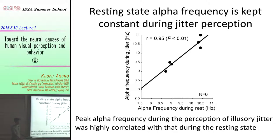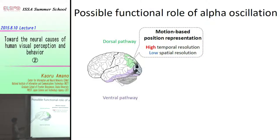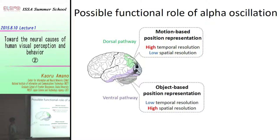So how do we interpret this result? Our hypothesis involves both the ventral pathway and dorsal pathway, which process different visual attributes. Our idea is that there are two position representations — one in the dorsal and the other in the ventral — working in a complementary manner. In the dorsal pathway, the position of an object is represented based on motion, giving high temporal resolution but low spatial resolution. In the ventral pathway, position is represented based on object detection, giving low temporal resolution but high spatial resolution.